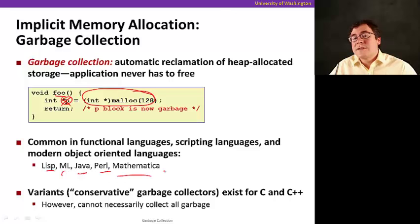So there are also variants of garbage collectors we call conservative garbage collections for C and C++. They have to be conservative because C and C++ are very flexible in how they support pointers, and that makes implementing garbage collection hard. So they have to be conservative. It works, but it might not be able to collect all garbage.